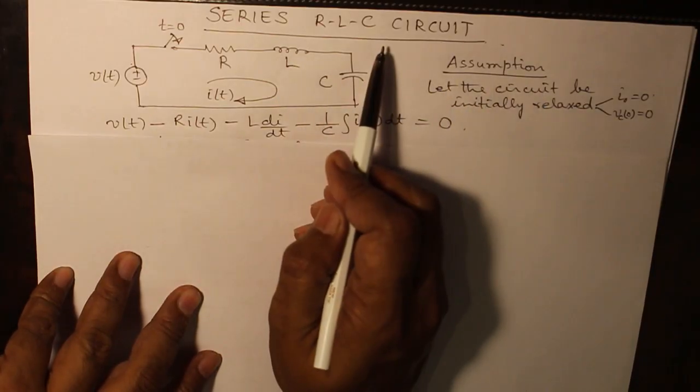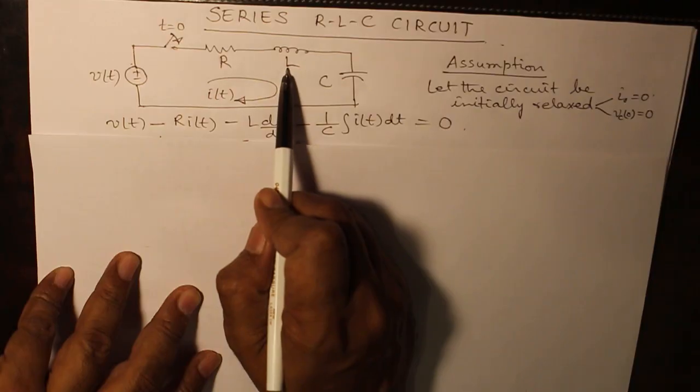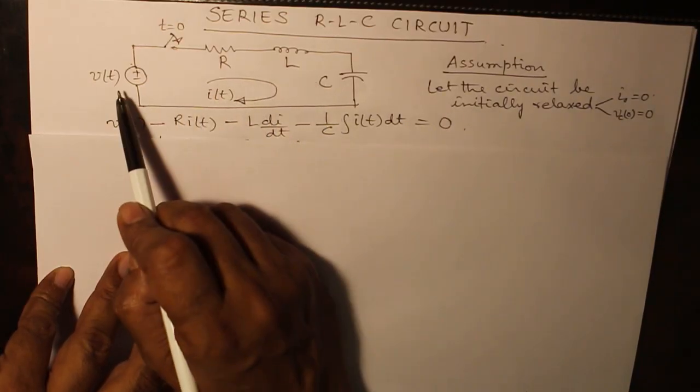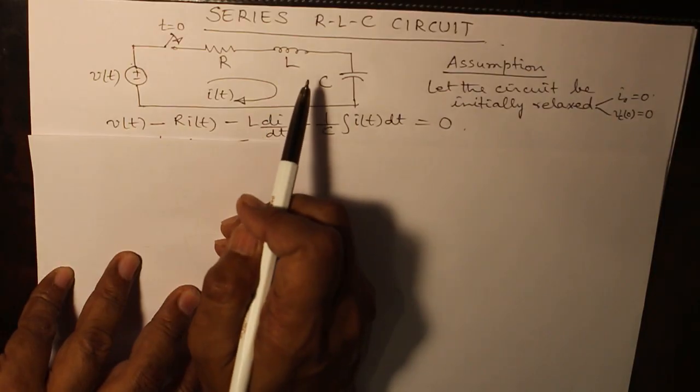In series RLC circuit there are two energy storage elements, inductor and capacitor, so the differential equation which will be formed for the input and output will be of second order.